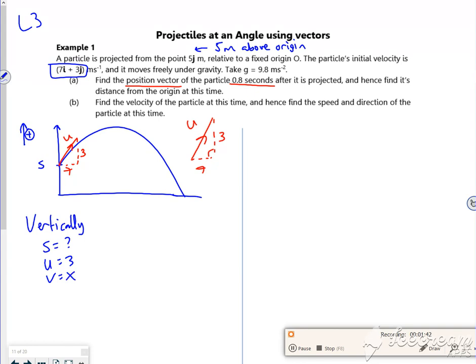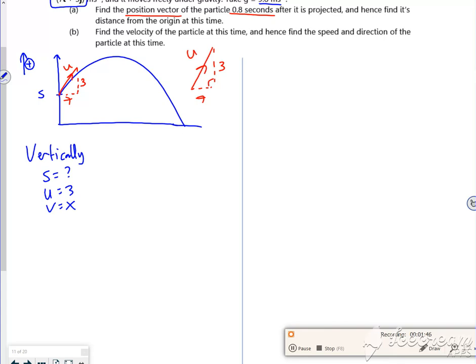v not bothered about. Well, it tells me my acceleration is 9.8. So remember that's minus 9.8. And t is 0.8.